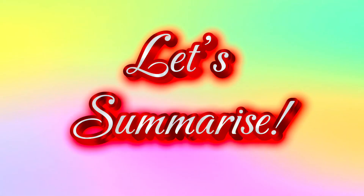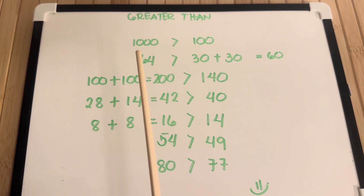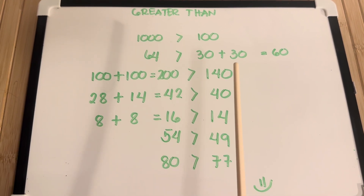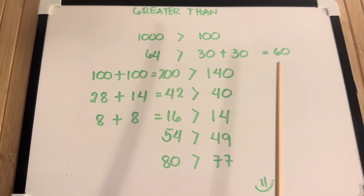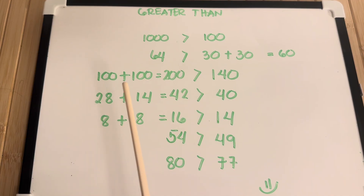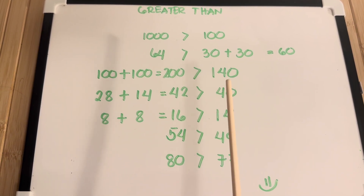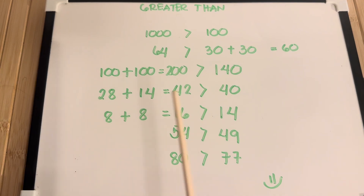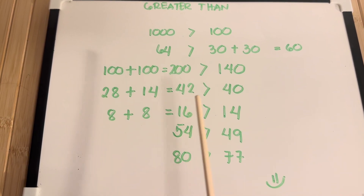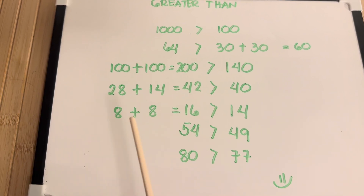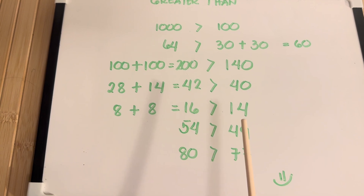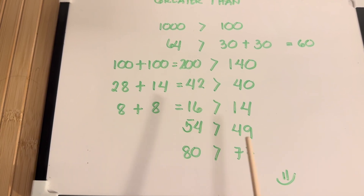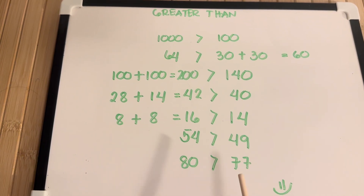Join me and let's summarize. Let's learn the greater than symbol: 1,000 is greater than 100. 64 is greater than 30 plus 30, or 64 is greater than 60. Next, 100 plus 100 is greater than 140, or 200 is greater than 140. 28 plus 14 is greater than 40, or 42 is greater than 40. 8 plus 8 is greater than 14, or 16 is greater than 14. Next, 54 is greater than 49. 80 is greater than 77.